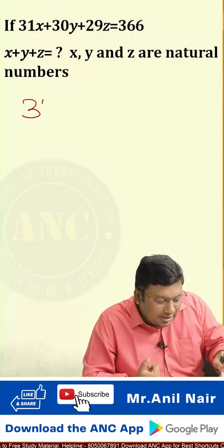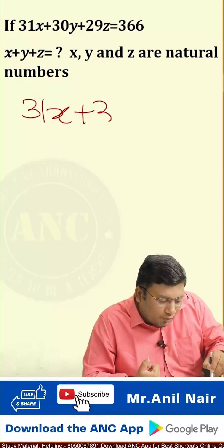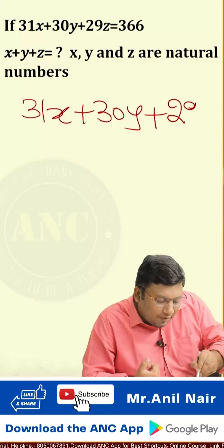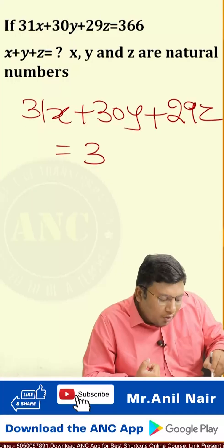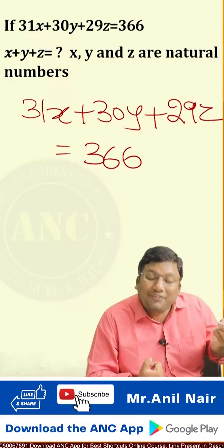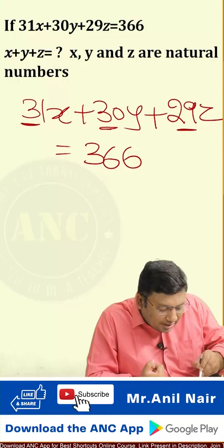Question is, 31x plus 30y plus 29z equivalent to 366. Look at the coefficients. What are the coefficients? 31, 30, 29.